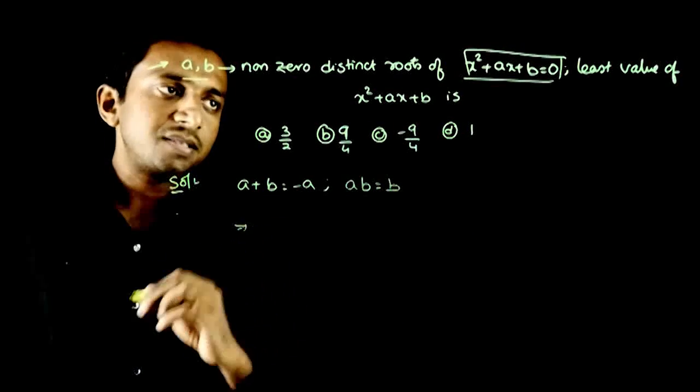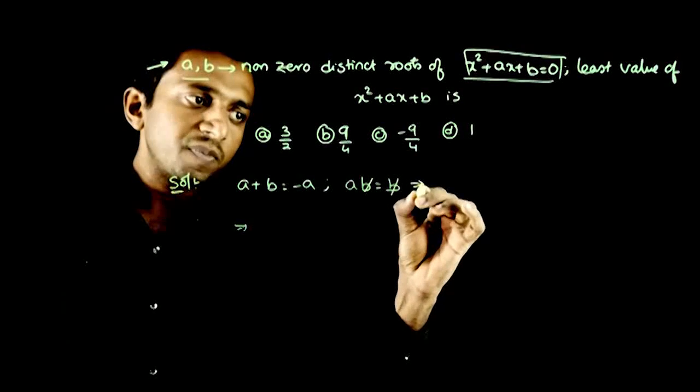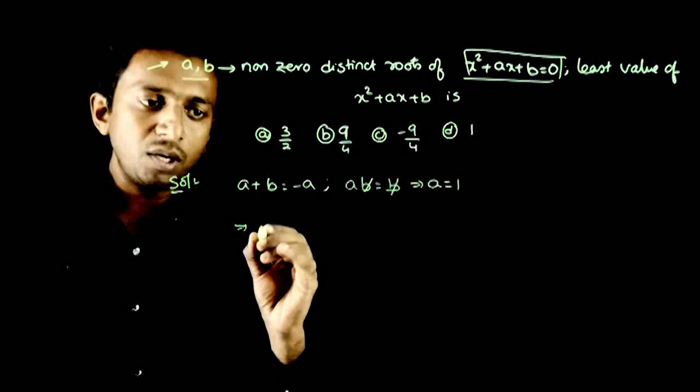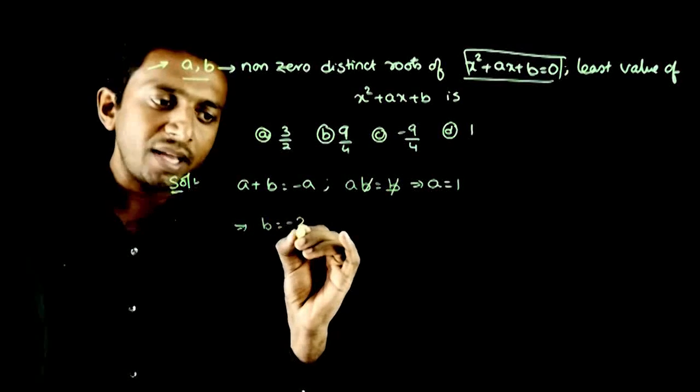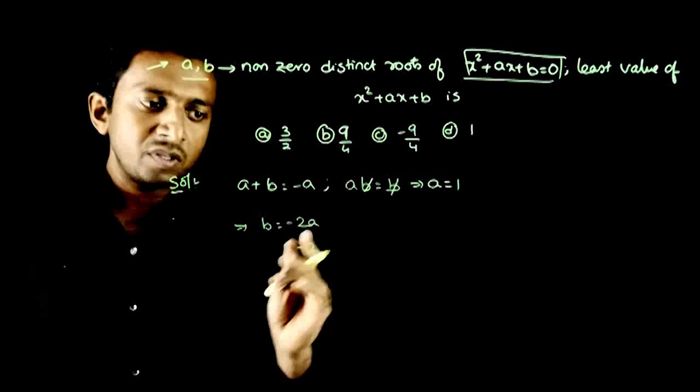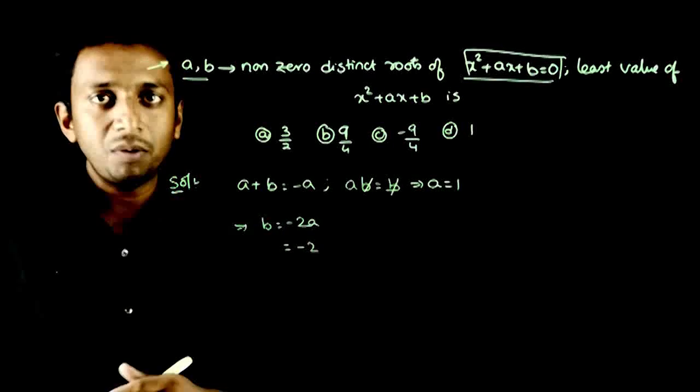So this implies, since a and b are non-zero distinct roots, we can cancel b from ab = b to get a = 1. Then from a + b = -a, if a = 1, we get b = -2a, that is -2. So we have found the values: a = 1 and b = -2.